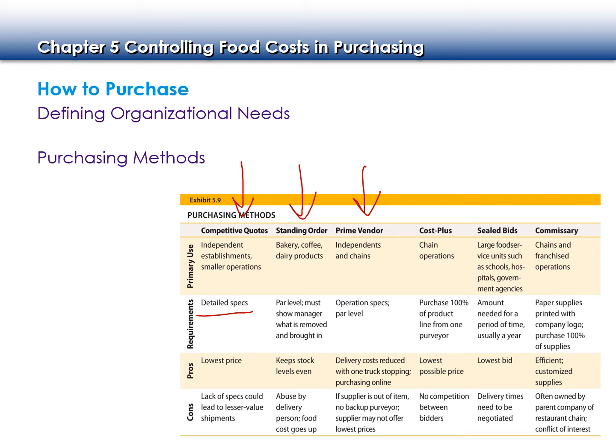The standing order method is typically used with dairy products and bakery goods. For example, if I'm a coffee shop I might have a standing order of 24 croissants every day — Monday through Sunday, you bring me 24 croissants in the morning. An issue with standing orders is that if I only sell 10 the day before, I then have 14 leftover plus the new 24, giving me 38 croissants to sell. If you don't arrange them appropriately you might end up with excessive product.